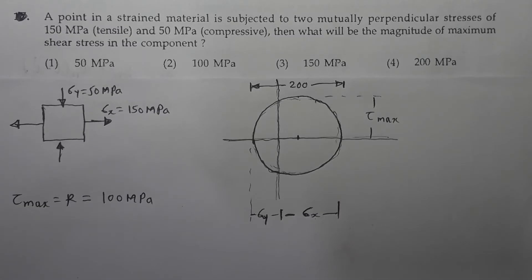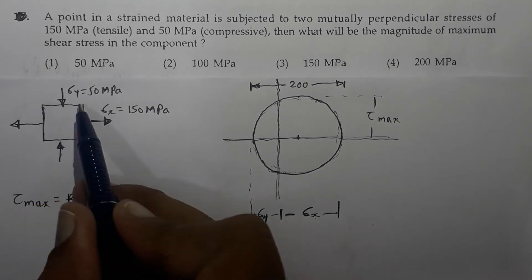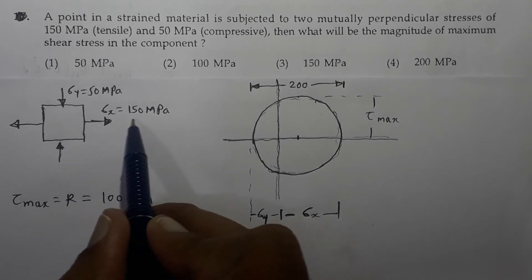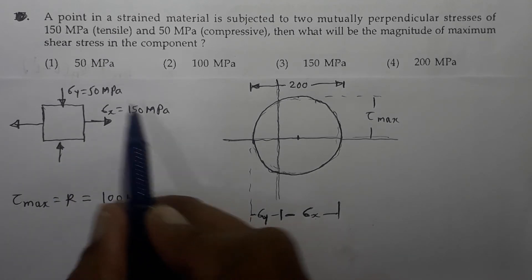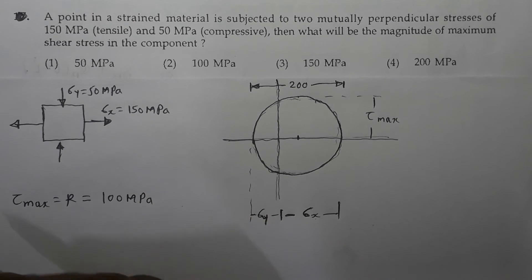Next question: a point in a strand material is subjected to two mutually perpendicular stresses of 150 MPa tensile and 50 MPa compressive. What will be the magnitude of maximum shear stress in the component? Now here to get the solution, I am drawing the strand material. Sigma X is given as tensile, so I have shown sigma X as tensile which is 150 MPa, whereas sigma Y is compressive which is 50 MPa. So I have shown the stress along Y direction also.